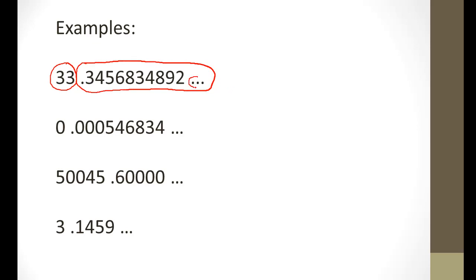These three dots right here simply indicate that this string of decimals continues on indefinitely. Here we have 0 as the whole part of the number, and 0.000546834 as the decimal part of the number.